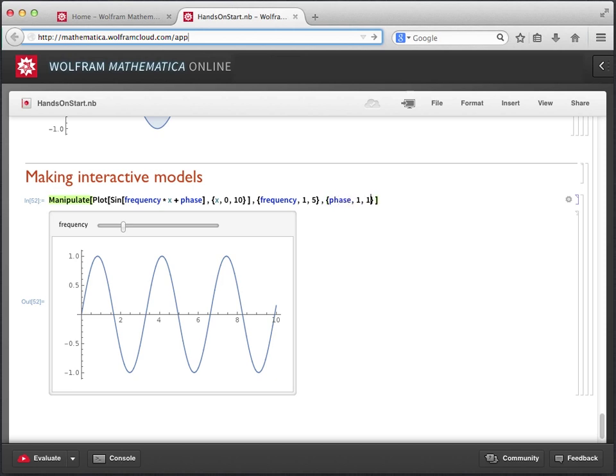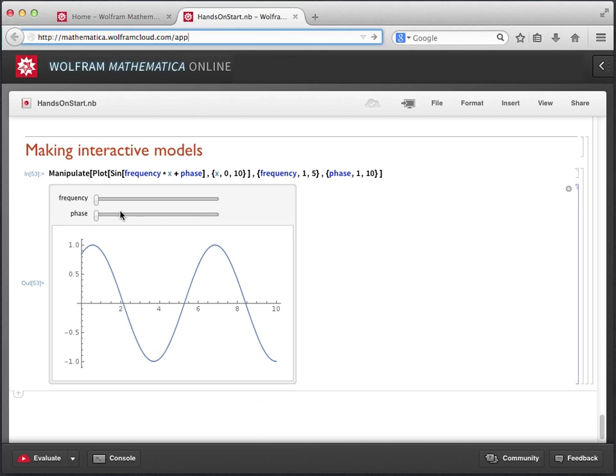So we put a comma after the list that contains frequency, and we'll copy that same syntax to make a new list for phase. So we'll have phase go from, let's say, 1 to 10, and then hit shift enter to evaluate. Now, our interactive model will have two sliders, one of which controls frequency, and the other one which will control phase.